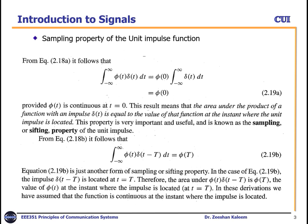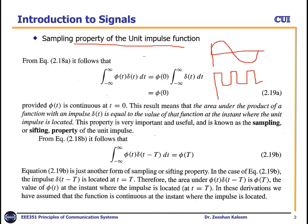The first topic is the sampling property of the unit impulse function. Why is this important in a communication system? Whenever you convert a signal from analog to digital, sampling is the first step. Mathematically, we can describe the sampling process using a unit impulse function.